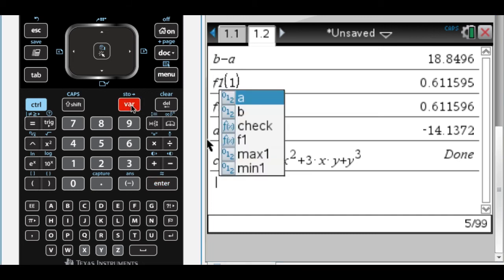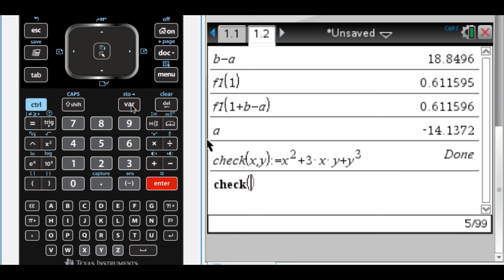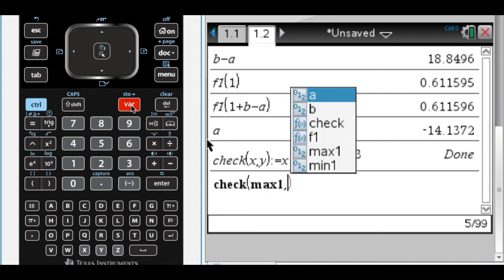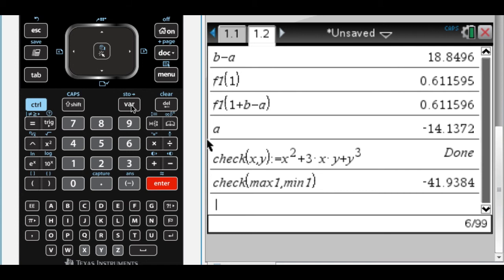So now what I want to do is I want to run check. And the thing I want to give it is max one comma min one. And it evaluates it for me.